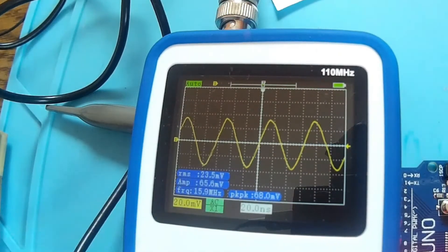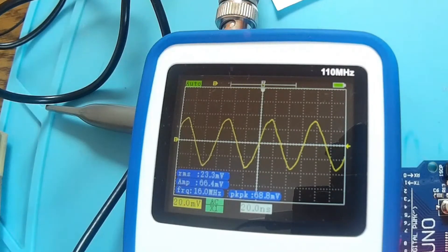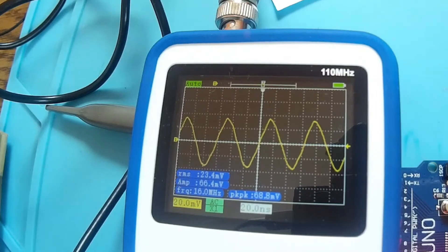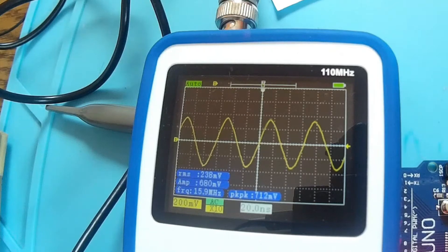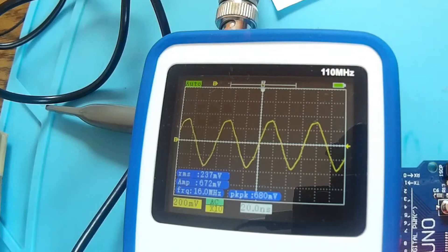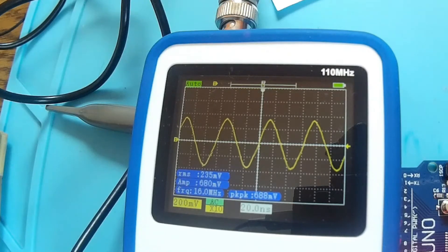You see over here, we have the frequency pretty stable: 15.9, 16, that's really nice. The probe should be on 10x and the machine too. We have 200 millivolts over here, RMS 237 and peak to peak is 672 millivolts. I may say it's working okay.